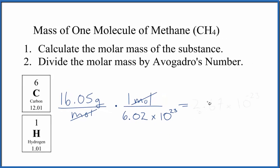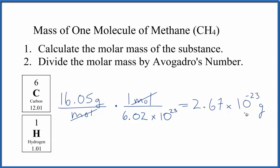So we do the math, we get 2.67 times 10 to the negative 23rd, and the units are grams. This makes sense — it's a really small number, but just one molecule of methane should have a very small mass. If you wanted this in kilograms, you divide by a thousand, and you'd end up with 2.67 times 10 to the minus 26. This is Dr. B with the mass of one molecule of methane, CH₄. Thanks for watching.